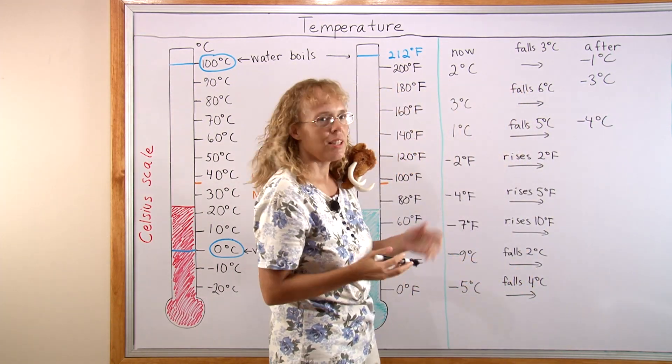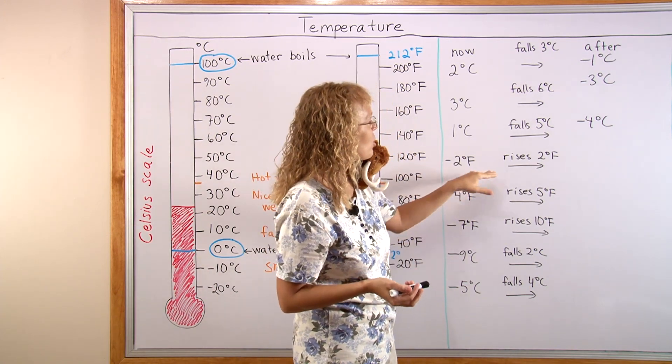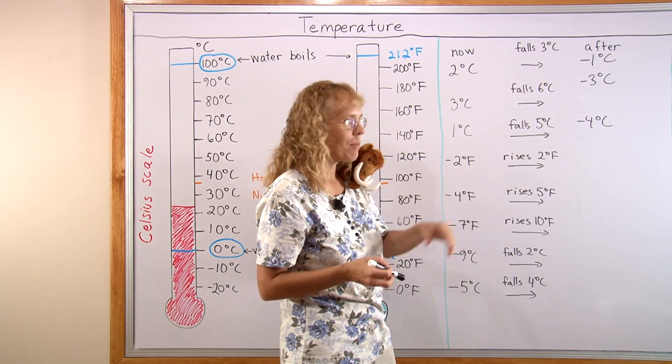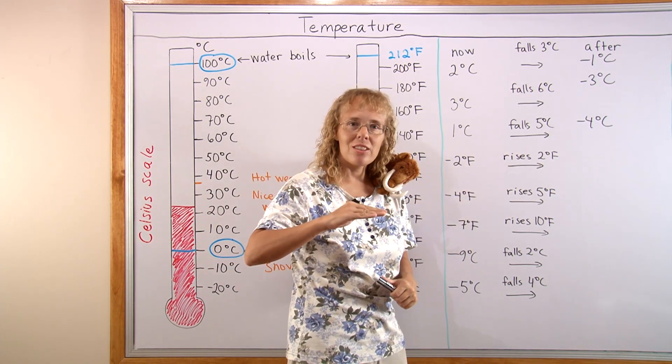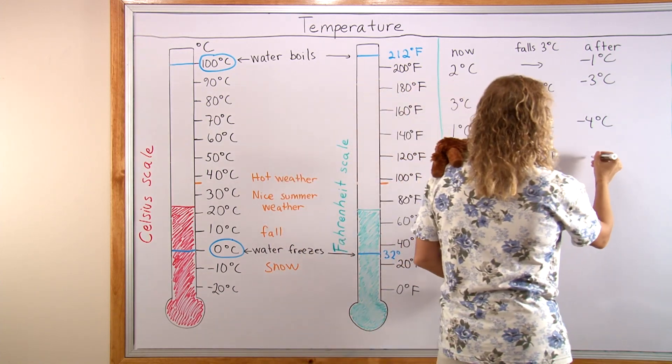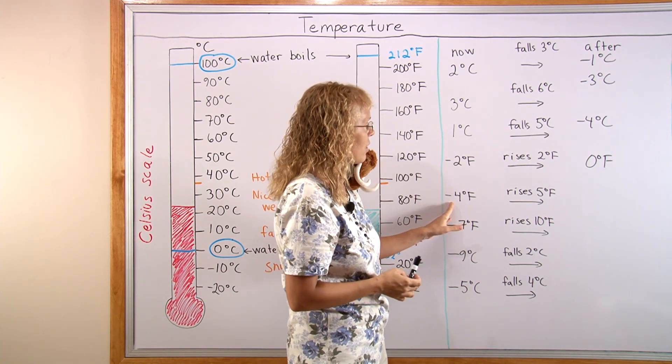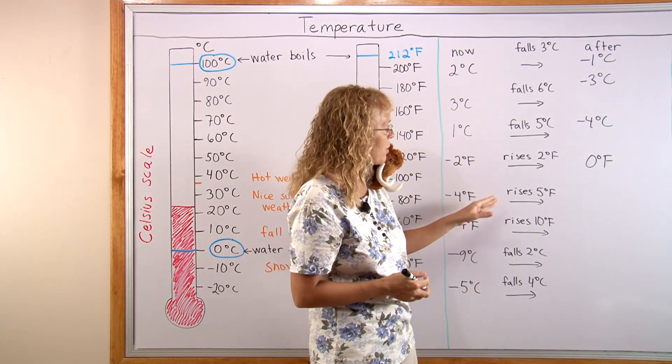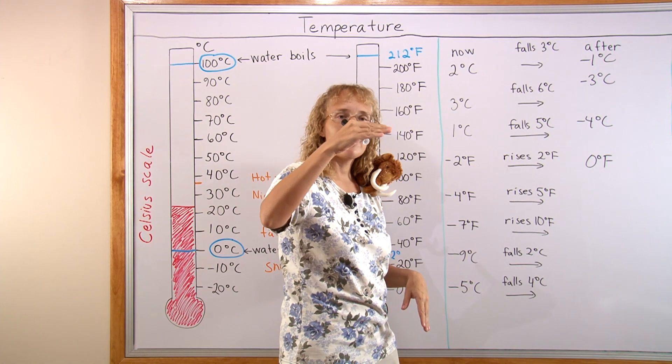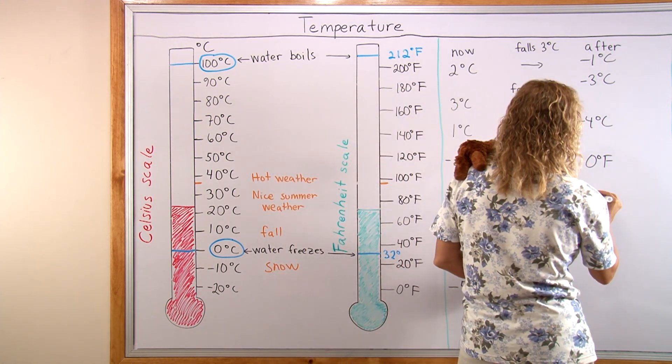Or you can use the Fahrenheit scale. It doesn't matter. Let's say we have negative 2 degrees Fahrenheit and the temperature rises 2 degrees. You are 2 degrees below 0, temperature rises 2, so you come to 0 degrees Fahrenheit. Or negative 4 degrees Fahrenheit and it rises 5 degrees. Then you come out of your negatives to 0 and 1 more. You have 1 degree Fahrenheit.